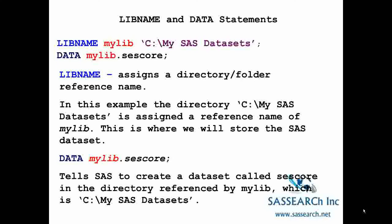When we want to create a permanent SAS data set, we need to use a libname statement. In this example, we're looking at: libname mylib c:\my SAS data sets. Mylib is used as a shortcut name or nickname for the storage location or directory where your SAS files are stored. This reference name can be any name that's one to eight characters long, and the association between the reference name and the directory lasts only for the duration of the SAS session, or until you change it with another libname statement.